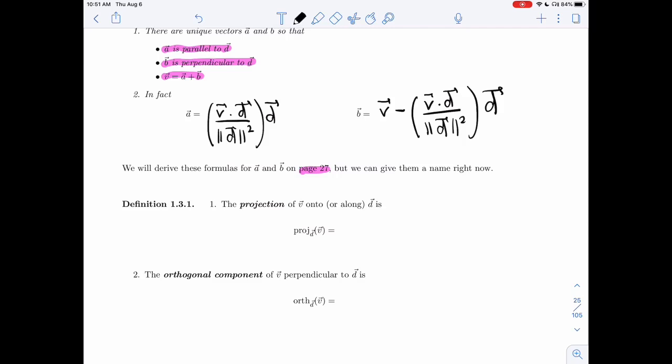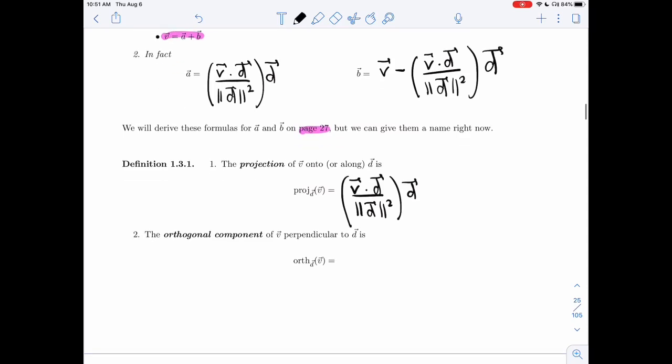So the projection of V onto D or along D is going to be A. So it's going to be V dot D—don't forget the dot here—V dot D over length of D squared times D. So that entire parentheses just gives you a number.